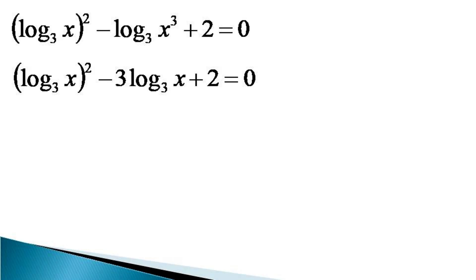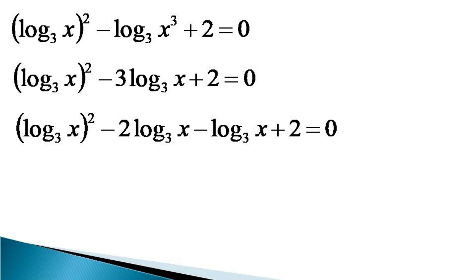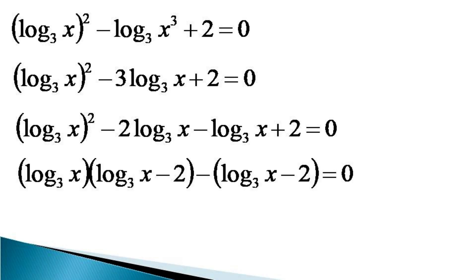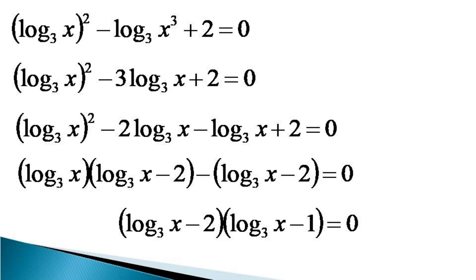This whole equation can be written as log of x to the base 3 whole squared minus 2 log x to the base 3 minus log x to the base 3 plus 2 equals 0. Log of x to the base 3 is taken common from the first two terms and minus sign from the last two terms. The equation becomes log of x to the base 3 minus 2, multiplied by log of x to the base 3 minus 1, is equal to 0.